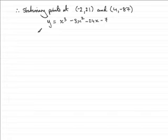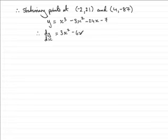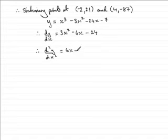We also found out that dy/dx was 3x squared minus 6x minus 24. Now what I'm going to do is consider the second differential. I'm going to differentiate dy/dx with respect to x again, and that is going to give me d²y/dx² equals 6x minus 6.